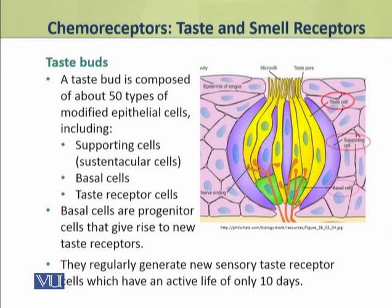The basal cells are the progenitor cells, which undergo continuous cell division and in due course produce new taste receptor cells, because the life of taste receptor cells is limited and basal cells replace them.